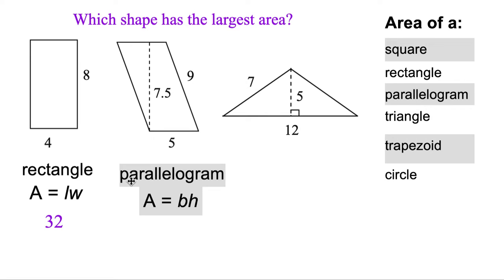To find the area, we're going to multiply the base, 5, times the height, 7.5. That's going to end up giving us 37.5.